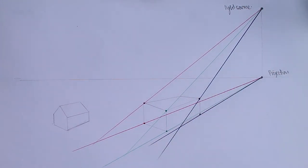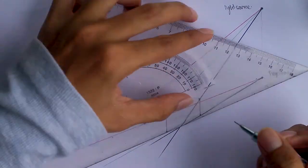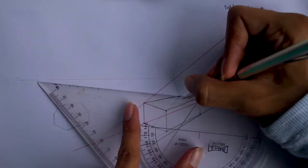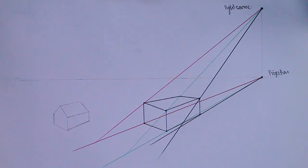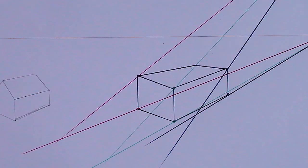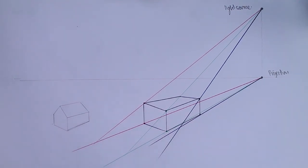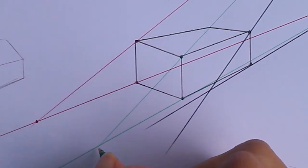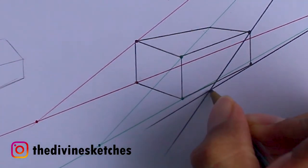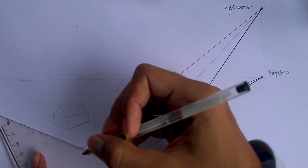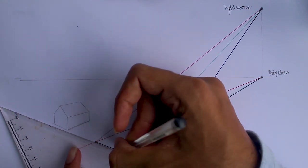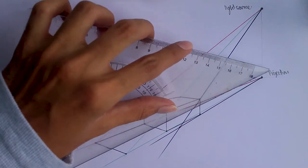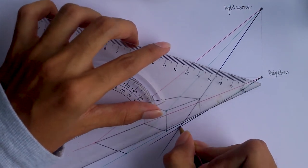First, let me make the object darker so you can understand clearly. Now you can see the object clearly, and also observe the intersection points we have got — where the red lines, green lines, and black lines intersect. These three intersection points are the boundaries of the shadow. Mark those intersection points and then join them together — this area shows the shadow of the object. This is the basic principle of giving a shadow.